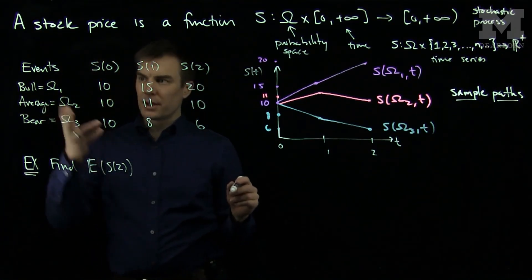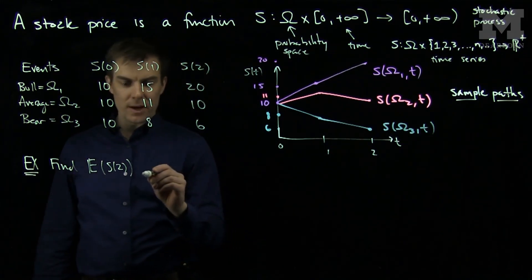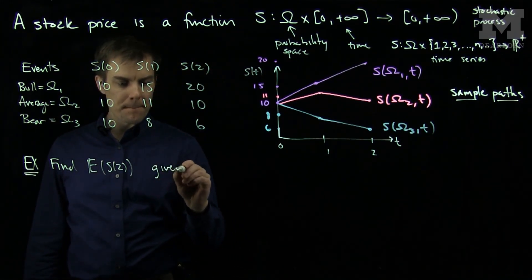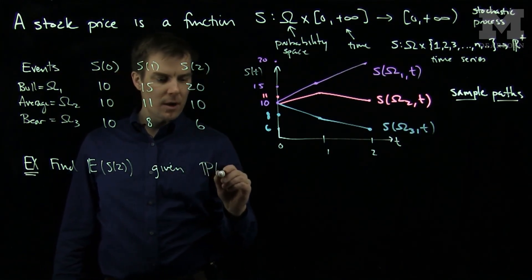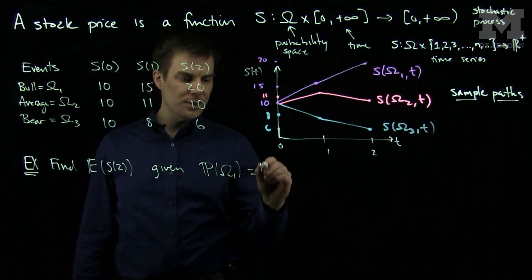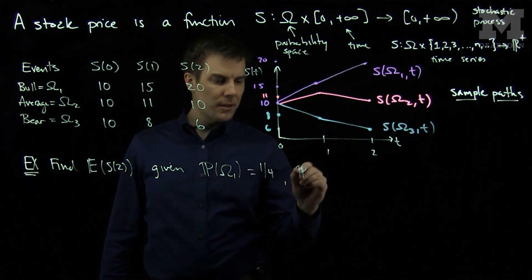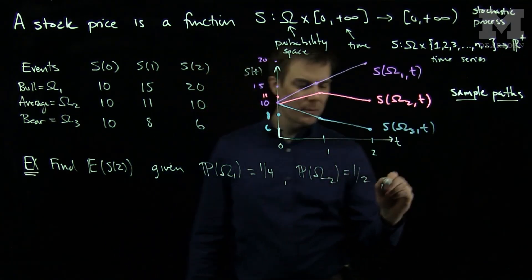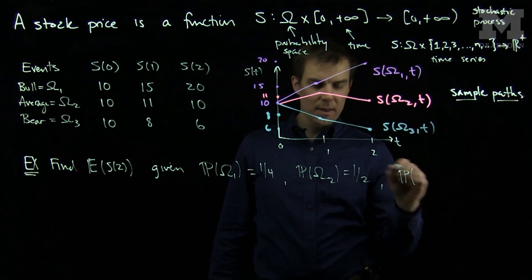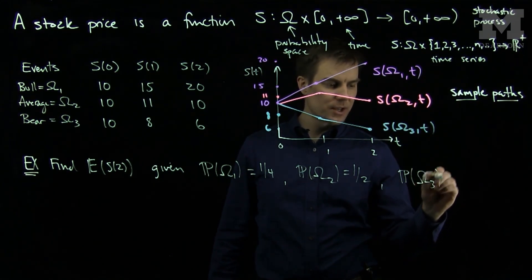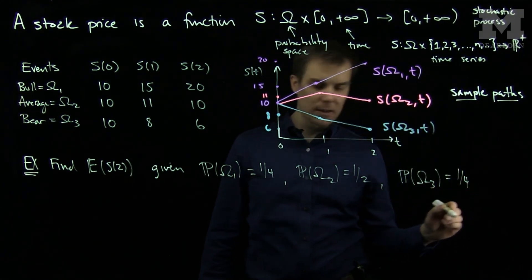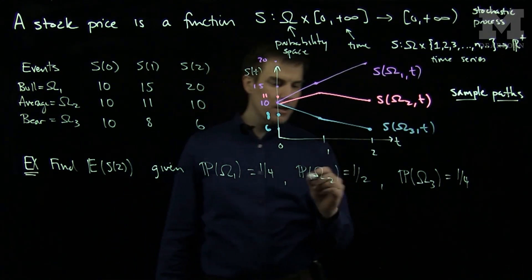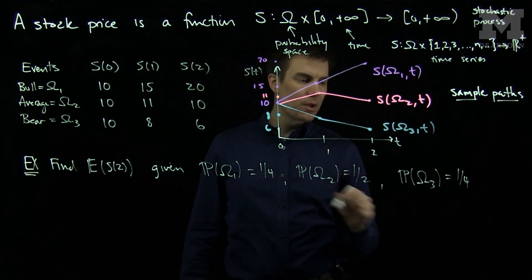Well, I need to know the probabilities of omega one, omega two, and omega three. Given that the probability of omega one, the probability that there is a bull market, we'll say that's a quarter. The probability that there is an average market is a half. And the probability that there is a bear market, we'll say is also a quarter. So it's equally likely that there's a bull or a bear market. And half the time, you'll have just an average market.